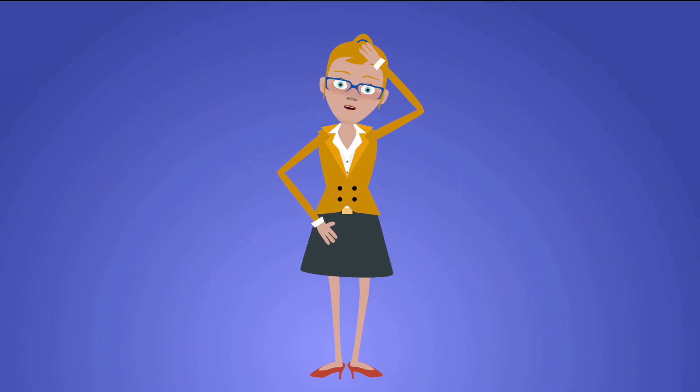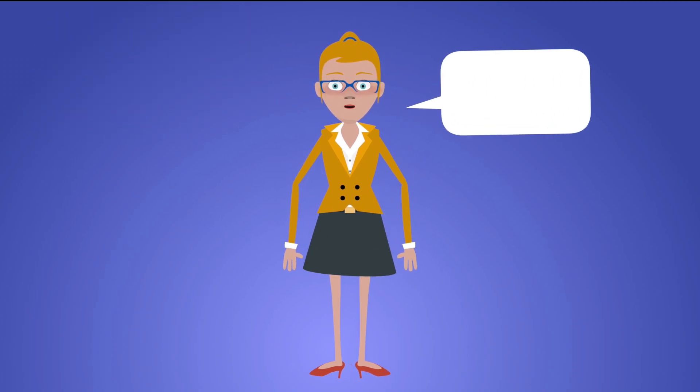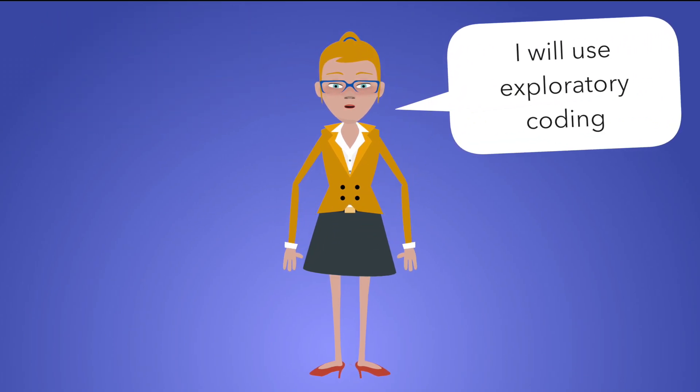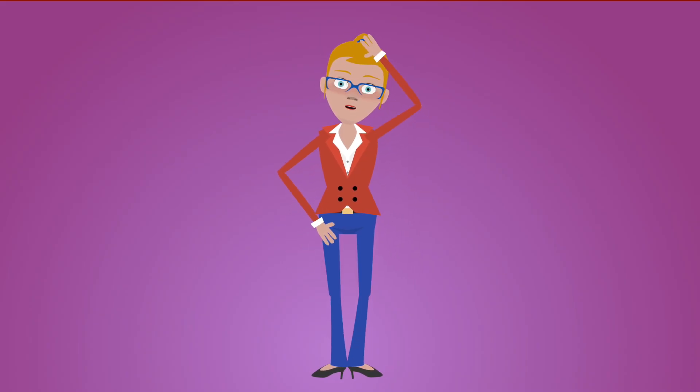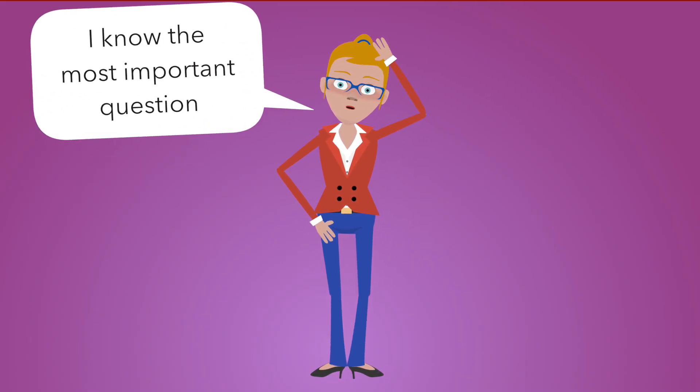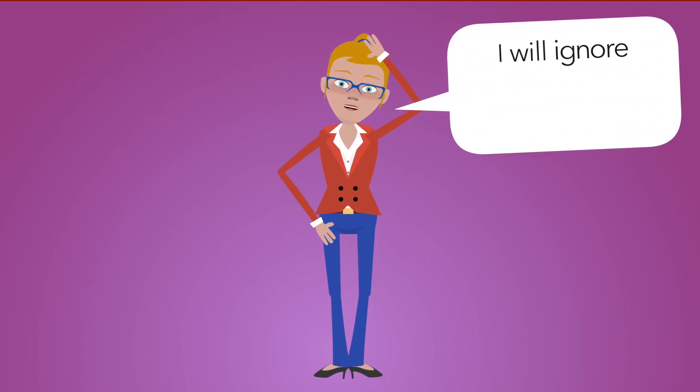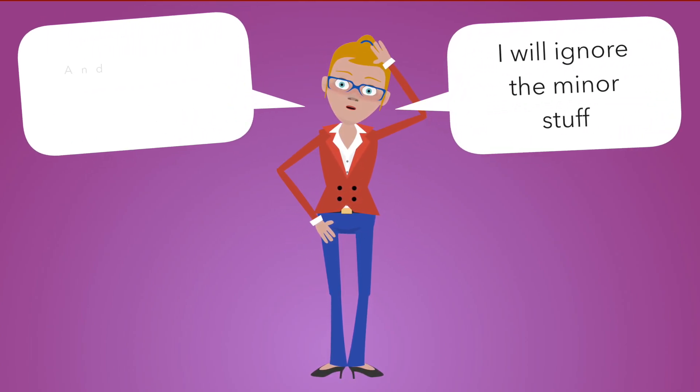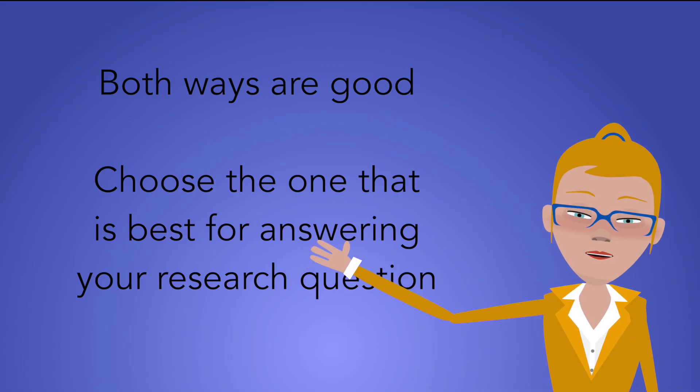Some people code to understand what's going on. They're using exploratory coding. They try as much as possible to just let the text tell them what's happening. Other people know which questions are most important and they're going to disregard 20% to 80% of the interviews that they've conducted in order to get to the meaty questions that they really want people to answer. Both are fine ways of going about coding, but it depends on your discipline and it depends on your research agenda.